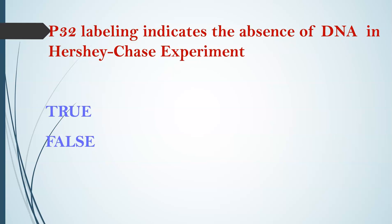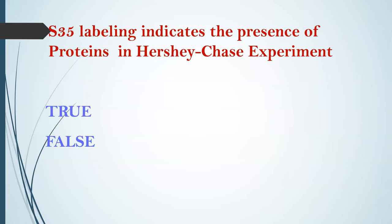Next question: P32 labeling indicates the absence of DNA in the Hershey and Chase experiment — state whether true or false. The answer is false. What is true is that P32 labeling indicates the presence of DNA.